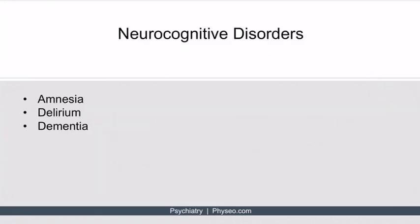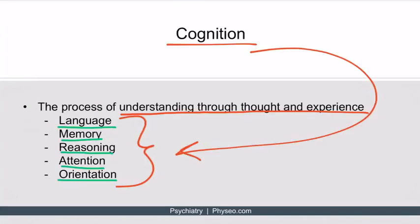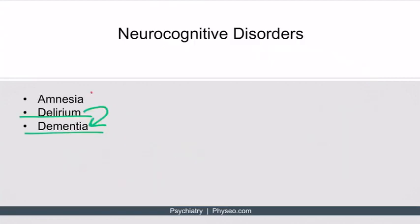When these cognitive functions are impaired, the patient can have delirium or dementia. We will talk about delirium more in this lecture, especially how to distinguish delirium from dementia. Before that, it's possible that someone can have just a loss of memory while their other functions — language, reasoning, attention, and orientation — remain intact. That would be amnesia.